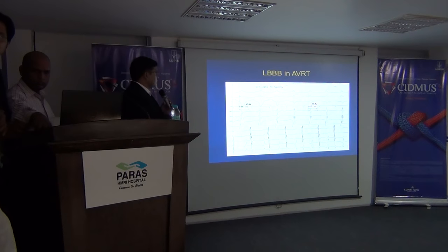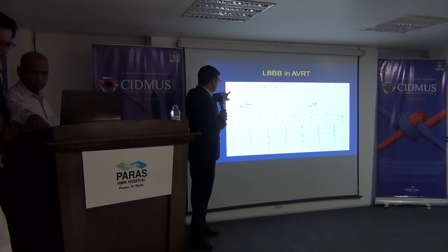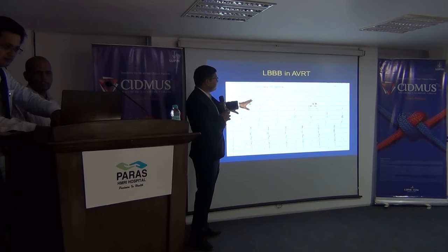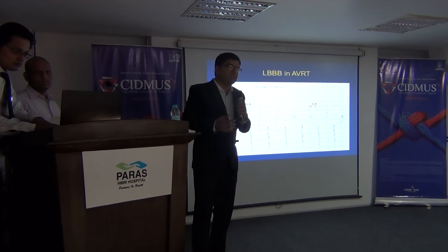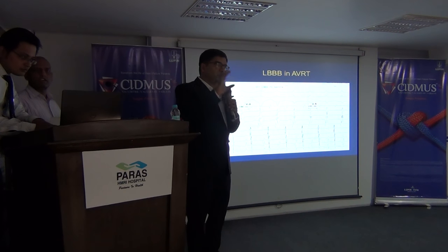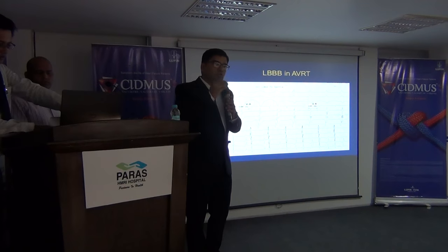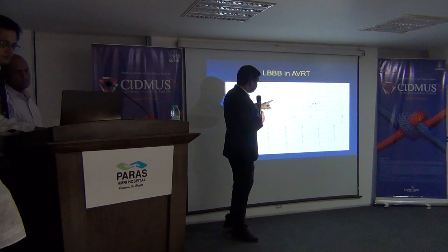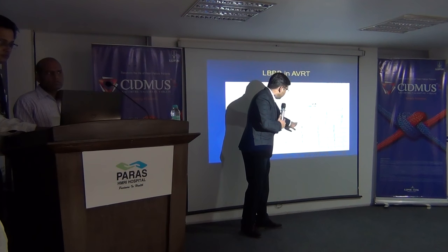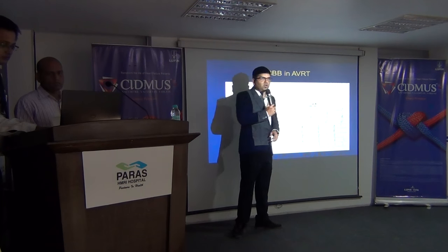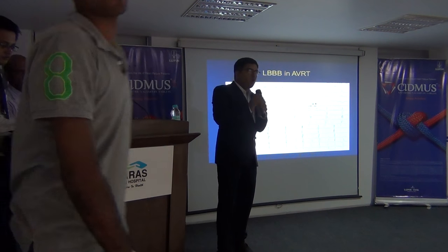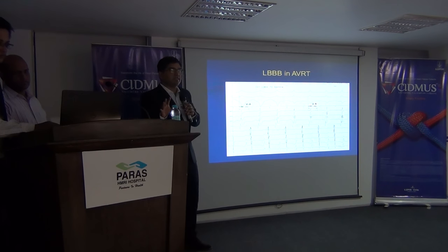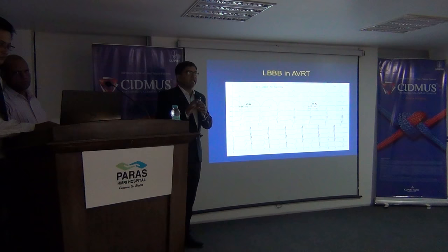So what do we notice over here? If you try to look carefully in lead V1, what do we notice? This is of course left bundle branch block. In EP as well, if you try to get a tracing — intracardiac tracing — you should go step by step. After that, we try to see that the distance between V and A is really long. So what do we call it? A long VA tachycardia. There is a lot of differential diagnosis for long VA tachycardia.